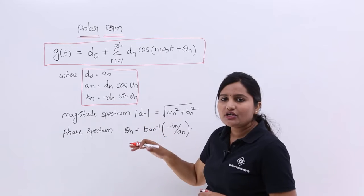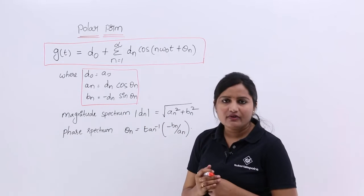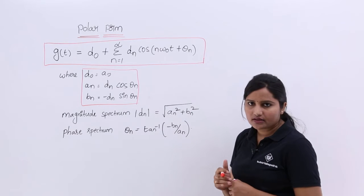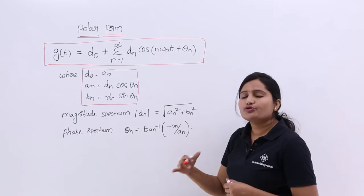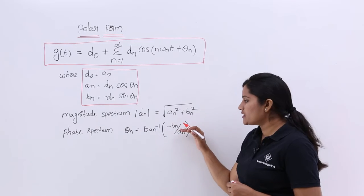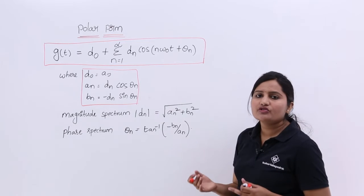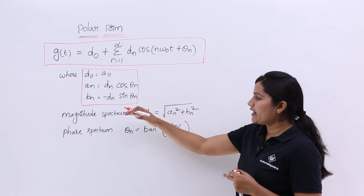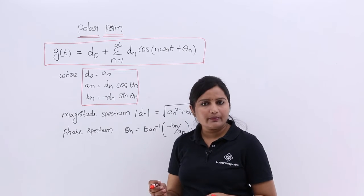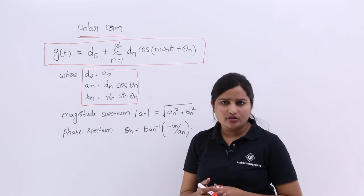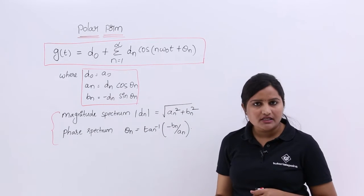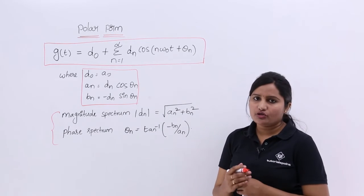The modulus of dₙ, which refers to the magnitude spectrum, can be calculated as the square root of aₙ² plus bₙ². This is also an important formula in polar form for solving GATE-level technical papers. The phase spectrum θₙ is equal to tan⁻¹(−bₙ / aₙ). If given the trigonometric coefficients aₙ and bₙ, you can find the magnitude spectrum and phase spectrum. The combination of magnitude spectrum and phase spectrum provides the amplitude spectrum of the signal.